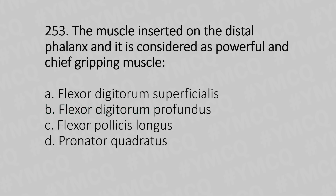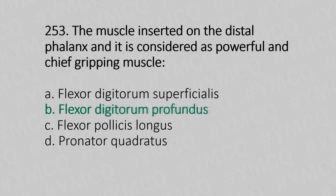Question 253: The muscle inserted on the distal phalanx and considered the powerful chief gripping muscle is — Option A: flexor digitorum superficialis. Option B: flexor digitorum profundus. Option C: flexor pollicis longus. Option D: pronator quadratus. The answer is Option B, flexor digitorum profundus.